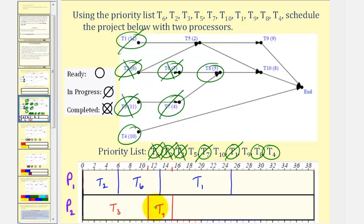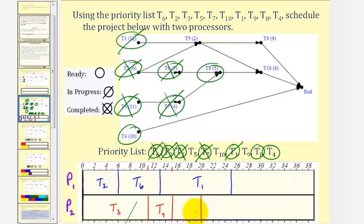After fifteen hours, task seven is complete. The highest priority ready task is task eight, which will now be assigned to processor two. Task eight takes five hours, so fifteen plus five is twenty. Task eight is now in progress.